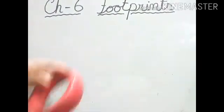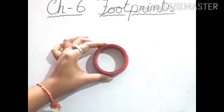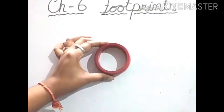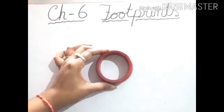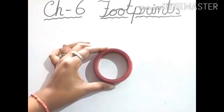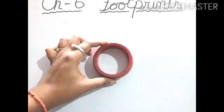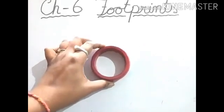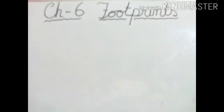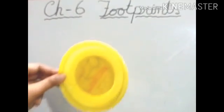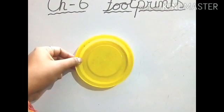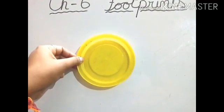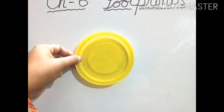The shape of this bangle — yes, tell me. Circle. Very good. Now let us see the next object. Yes, it is also circle. Very good.